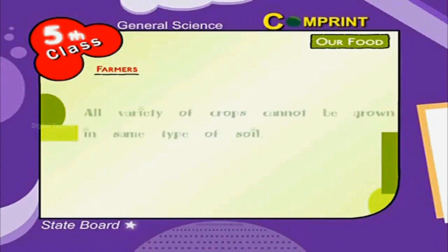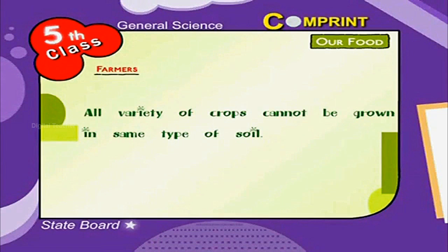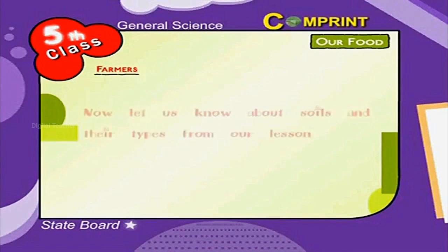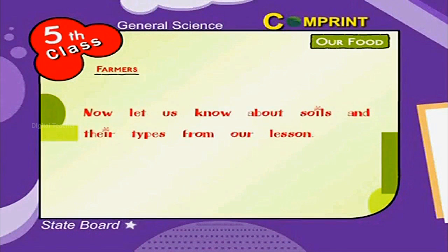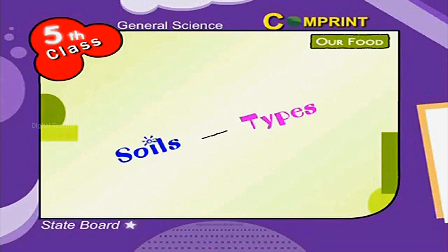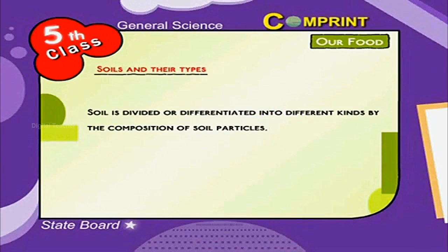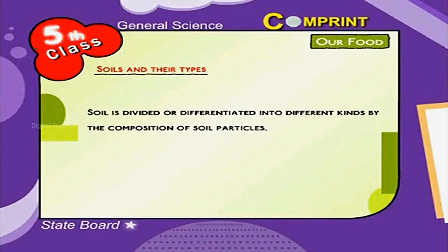All variety of crops cannot be grown in the same type of soil. Now let us know about soils and their types. Soil is divided into different kinds by the composition of soil particles.